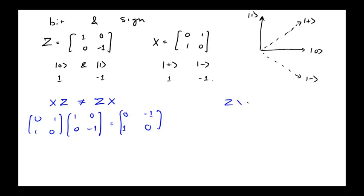Whereas, z times x, which is 1, minus 1, 0, 0, times 1, 1, 0, 0, is what? And it's 1, minus 1, 0, 0, 0.